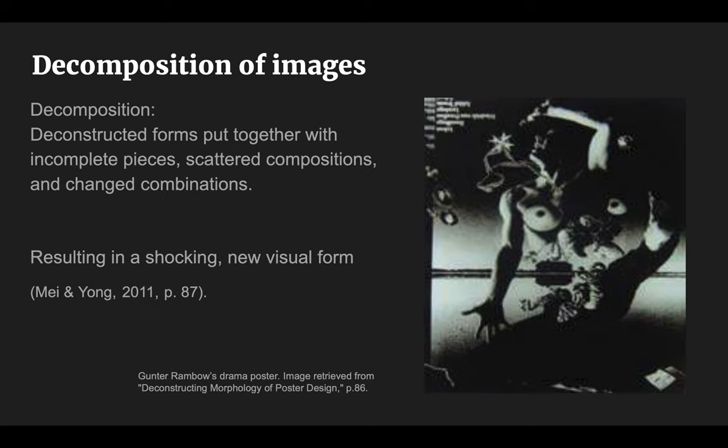Another method Rimbaud used to create a unique design is decomposition. It refers to deconstructing the form and putting it all together, changing its composition and sizes. It results in a striking new visual form with scattered, altered combinations and incomplete pieces. In this poster, Rimbaud used the body pieces of the main characters to create a new shape and composition.